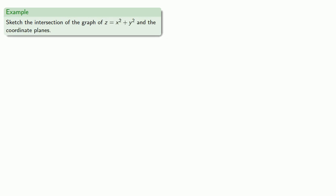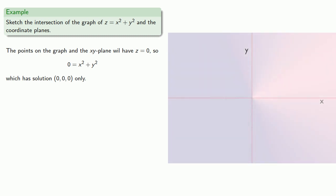We can do this for more complicated graphs as well. Let's consider the graph of z equals x squared plus y squared and the coordinate planes. The points on the graph and the xy plane will have z equal to zero. This has the solution 0, 0 only, which is just a single point at our origin.